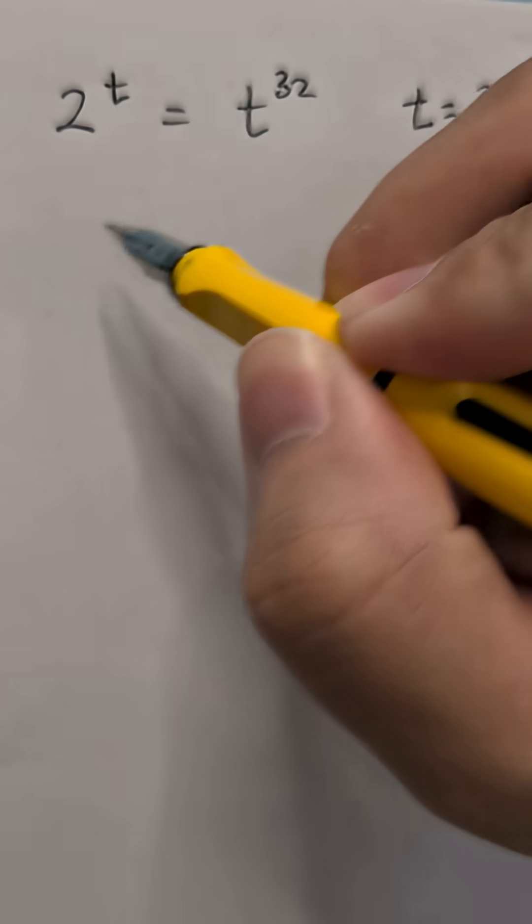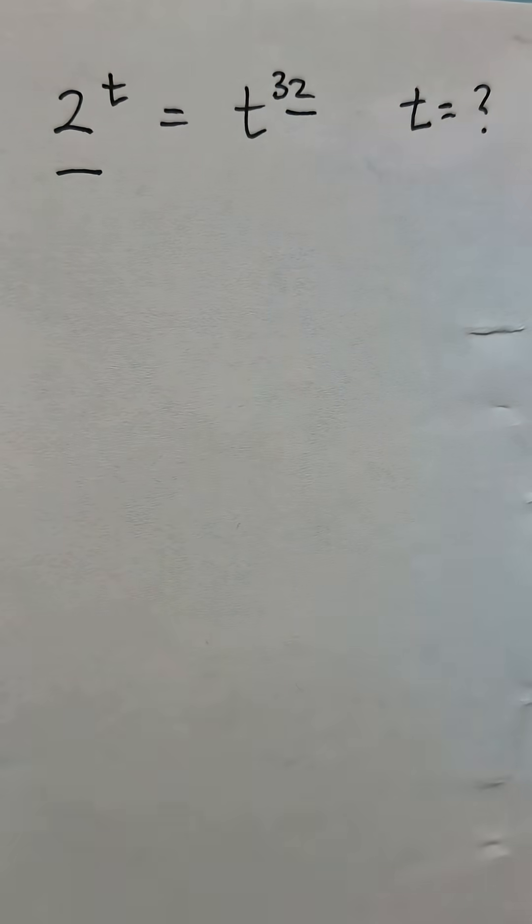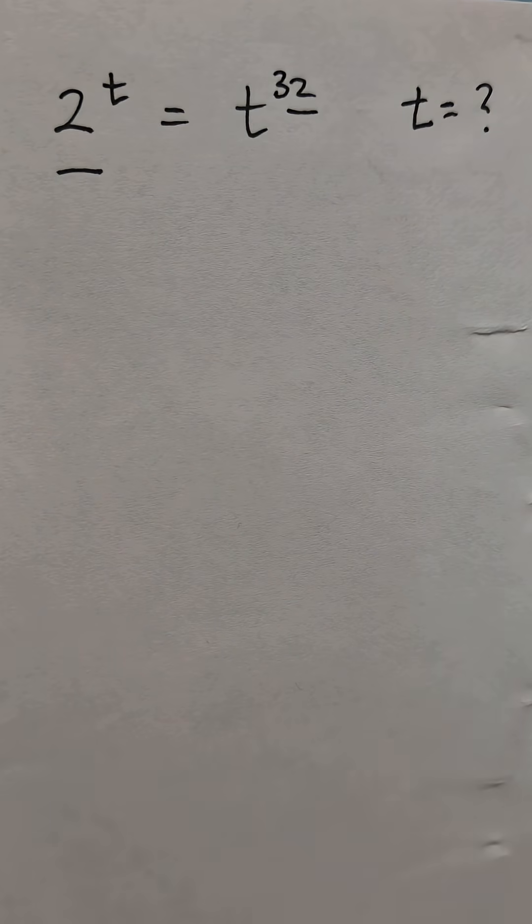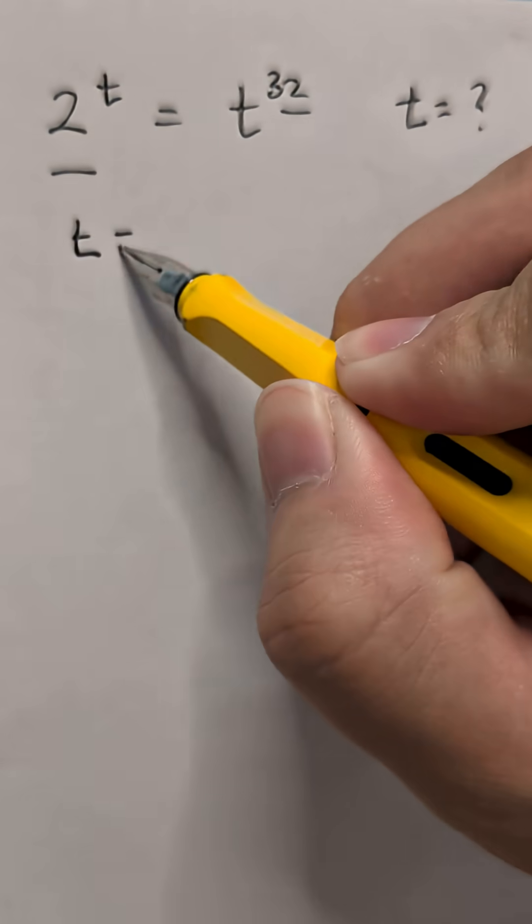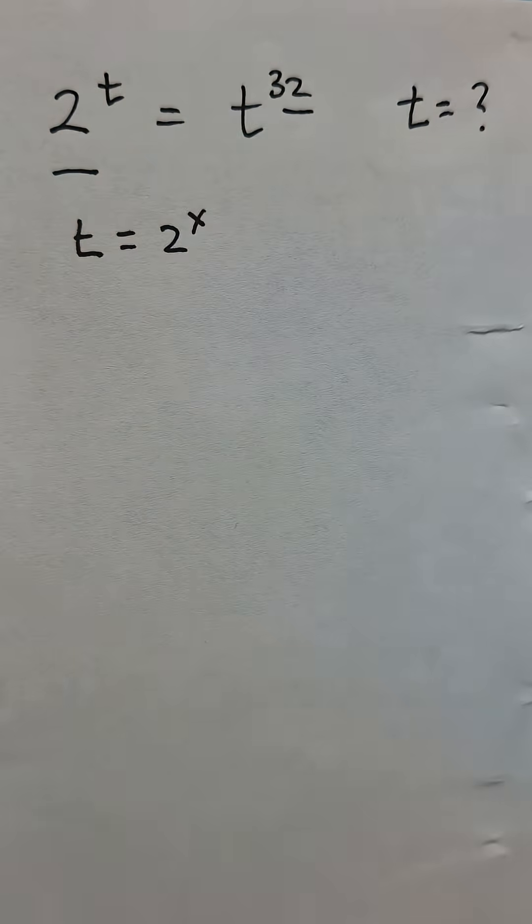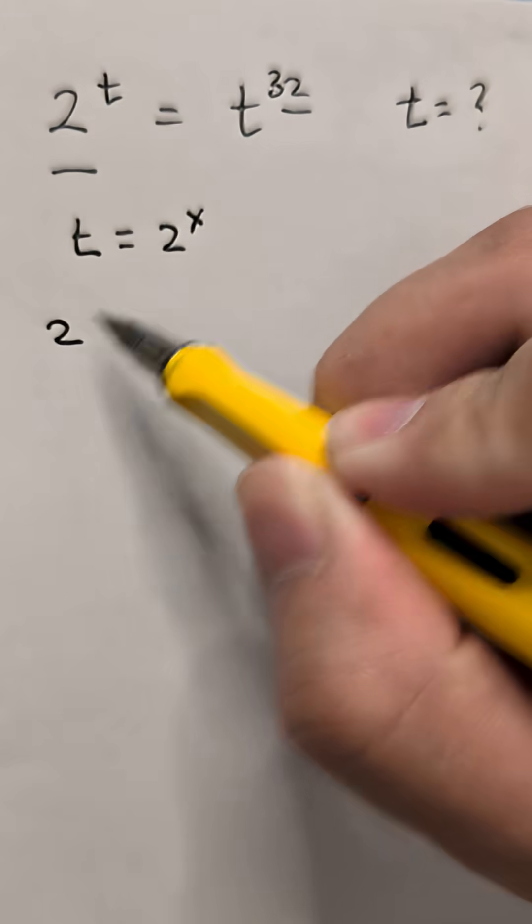So first thing I would do with this one is, you notice the 2 and the 32, it has to be something to do with the 2 base. So let's introduce a new variable t equals 2^x. So rewrite the formula.